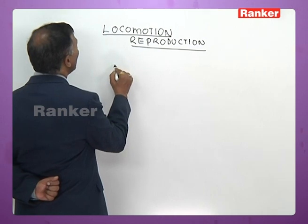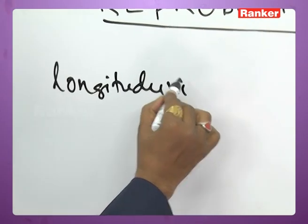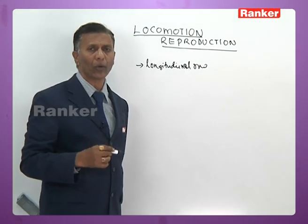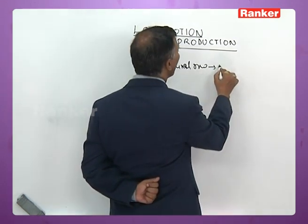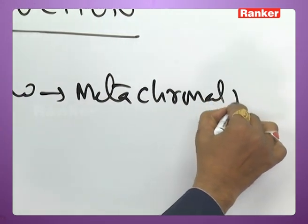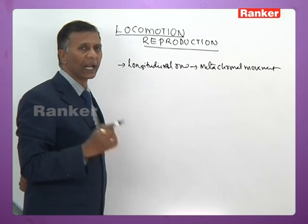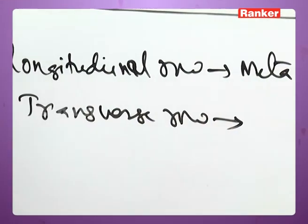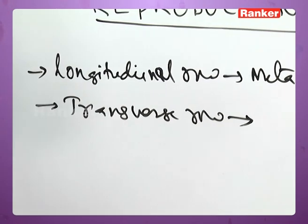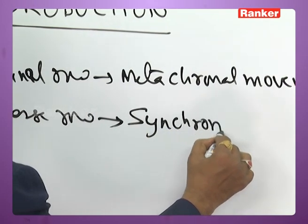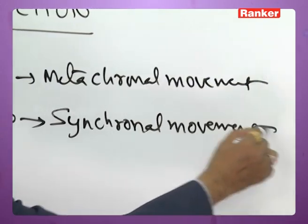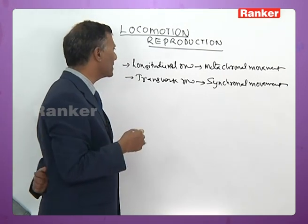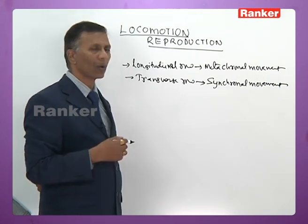Cilia arranged in a longitudinal row vibrate one after the other — this kind of movement is called metachronal movement. Cilia arranged in a transverse row all vibrate at once — this is called synchronal movement. So cilia of the transverse row vibrating simultaneously is synchronal movement, while cilia of the longitudinal row vibrating sequentially is metachronal movement.